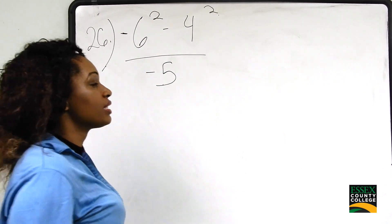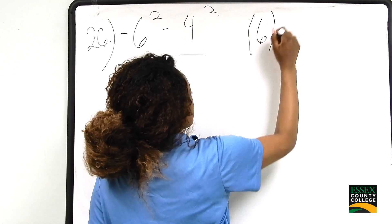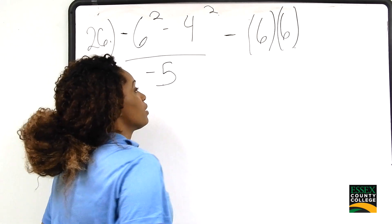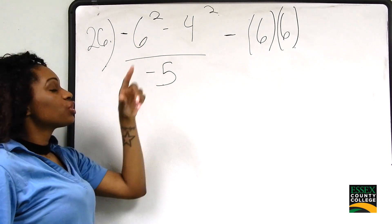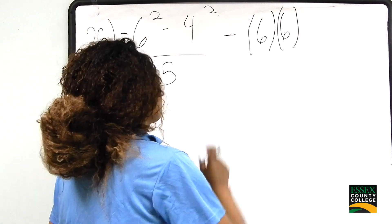We're basically taking 6 times 6, or multiplying 6 times 6, and leaving the negative on the outside. So we're just squaring the number itself - you just want to do 6 times 6.